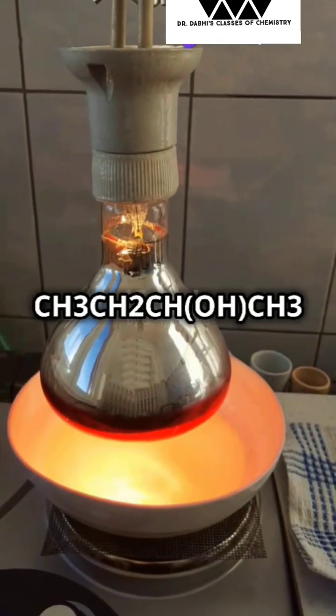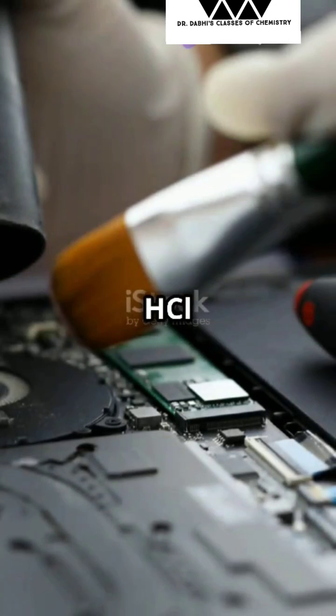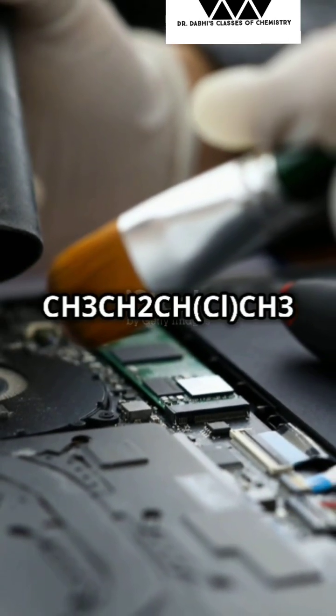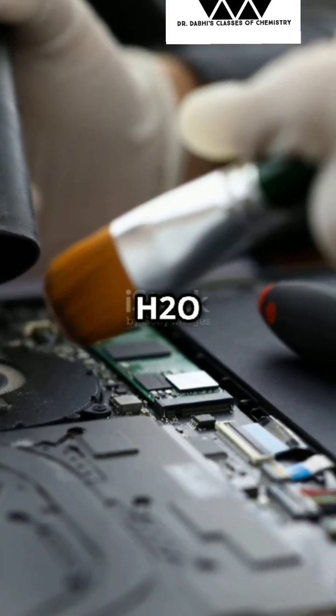Secondary CH3CH2CHOHCH3 plus HCl with ZnCl2 yields CH3CH2CHClCH3 plus H2O.